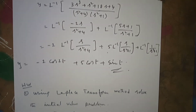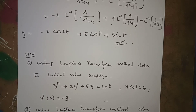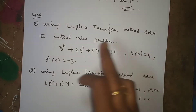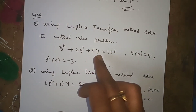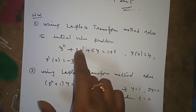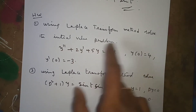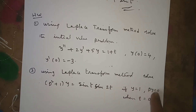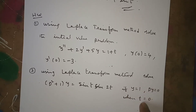After completing this problem, do the following two problems as homework using the Laplace transform method. First: solve y'' + 2y' + 5y = 1, with y(0) = 4 and y'(0) = −3. Second: solve (D² + 1)y = sint·sin2t, with y(0) = 1 and y'(0) = 0. Complete these two problems in the same way. Thank you very much.